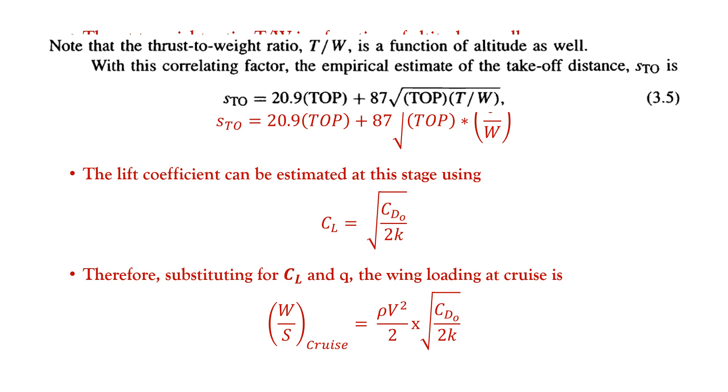Along with that, the lift coefficient can be estimated using CL equals CD0 by 2K, and substituting the CL and dynamic pressure, the formula for W by S at cruise can be represented as rho V square by 2 times CD0 by 2K. And the required parameters like K and CD0 will be calculated in the spreadsheet in the following slides.